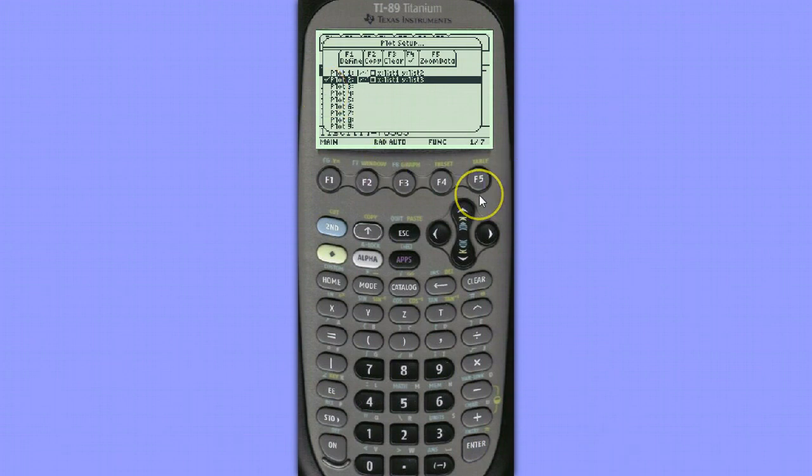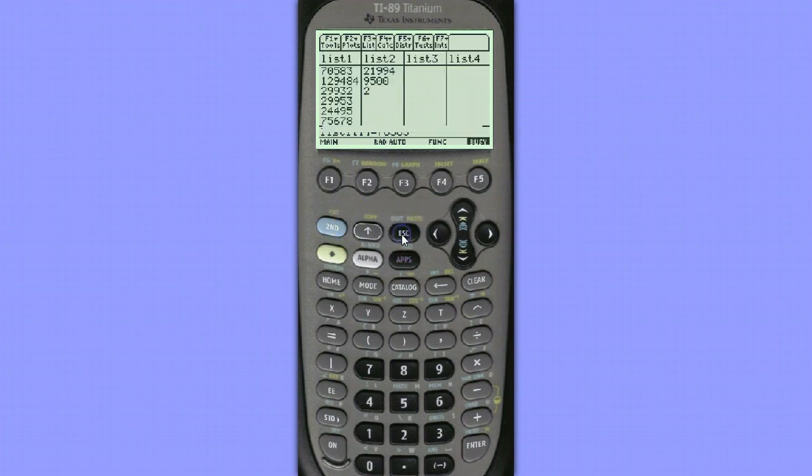Before we hit zoom data, let's make sure that our regression equation has been turned off. We don't want to plot the regression equation across our residual plot. So let's escape out of here.